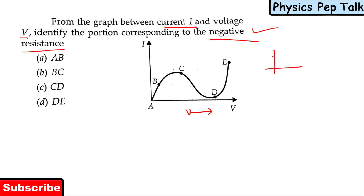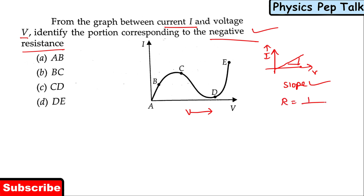We know that when we plot a graph of current along the y-axis and voltage along the x-axis for a metal, the graph looks something like this. When we know the value of slope, resistance is equal to 1 by slope. This is how we measure resistance in the lab.